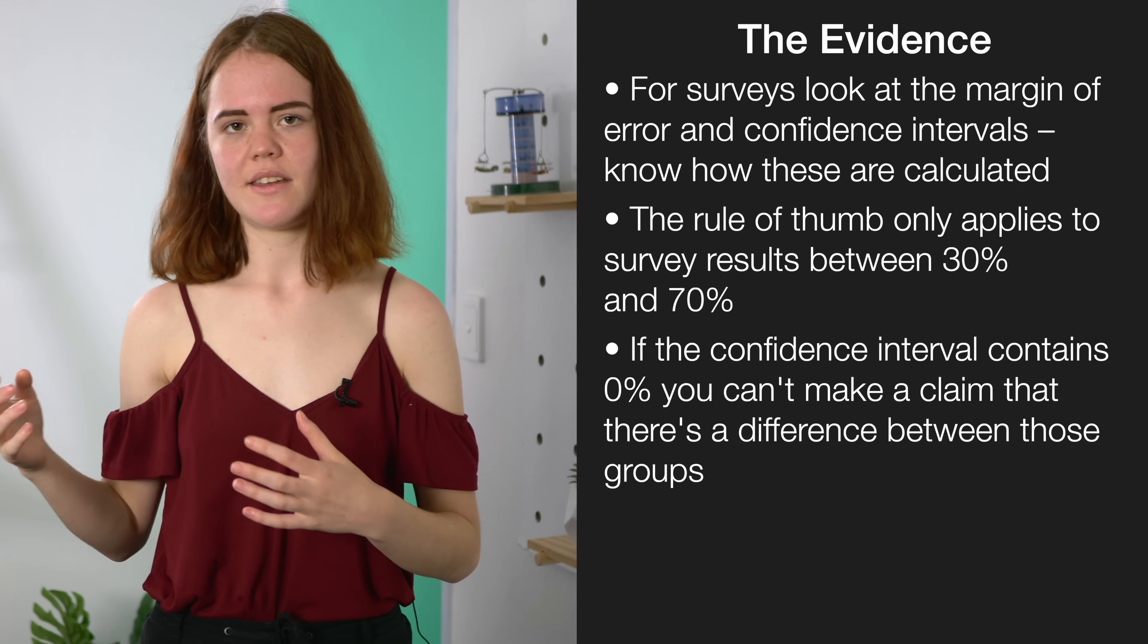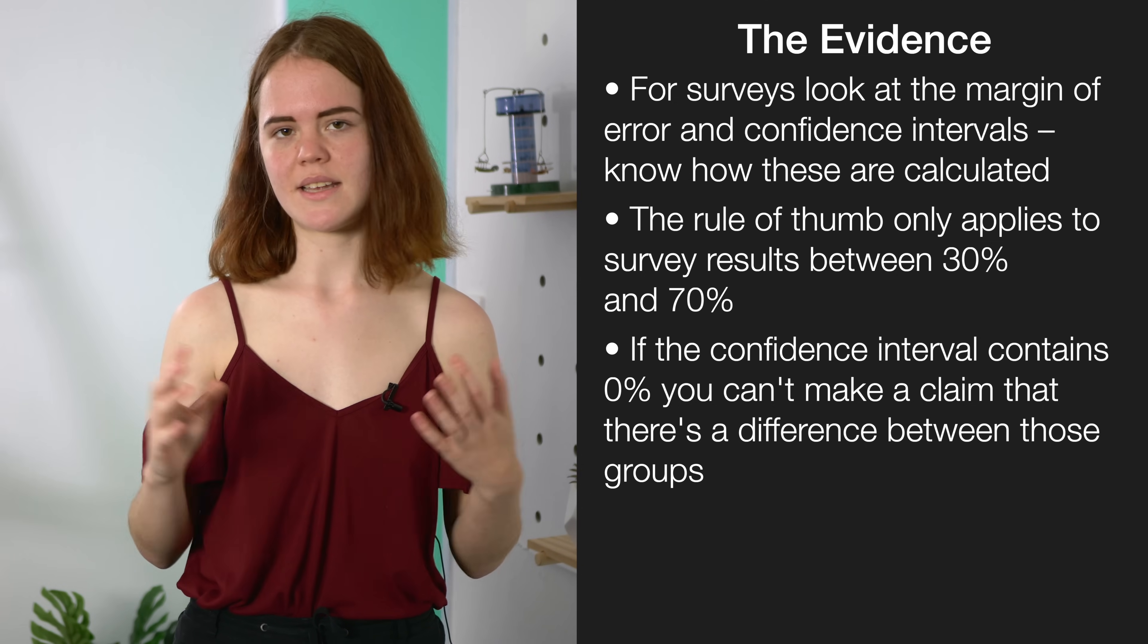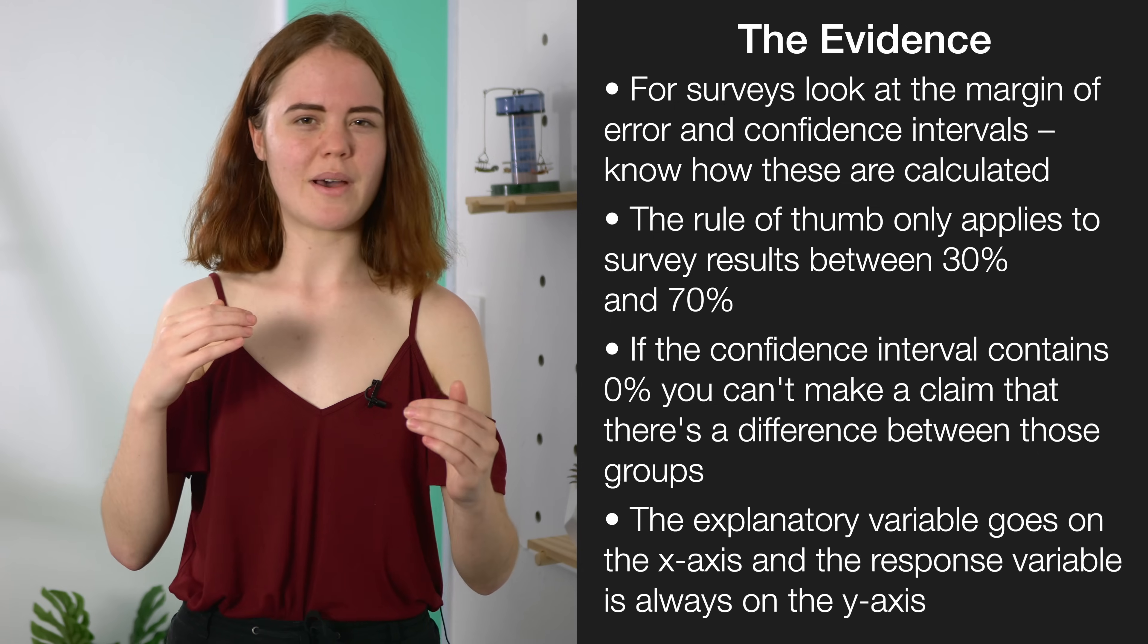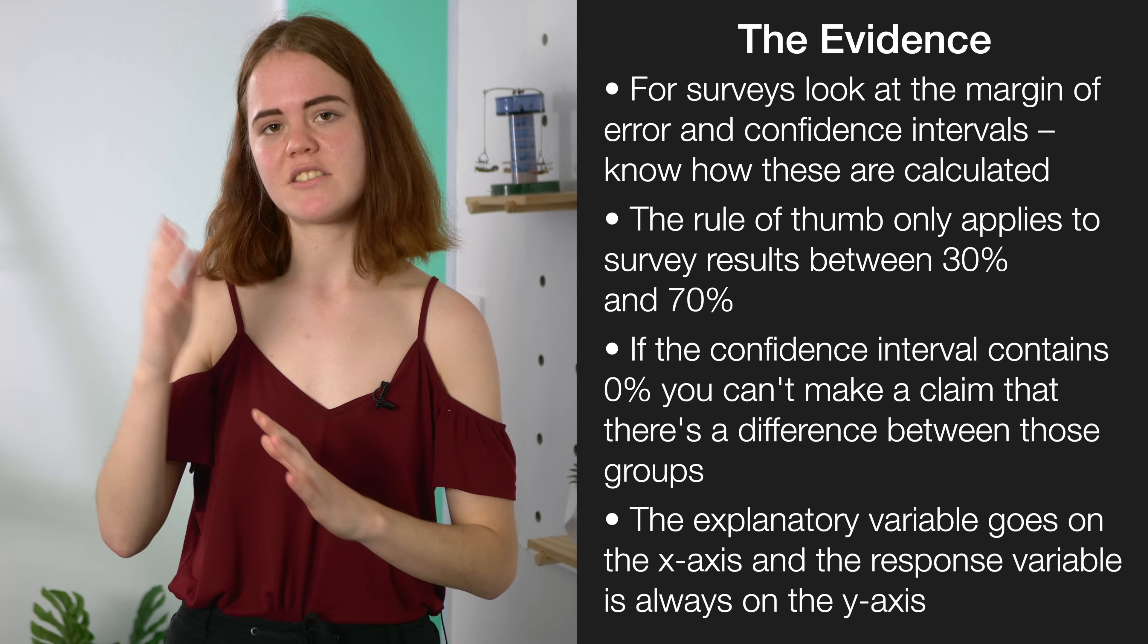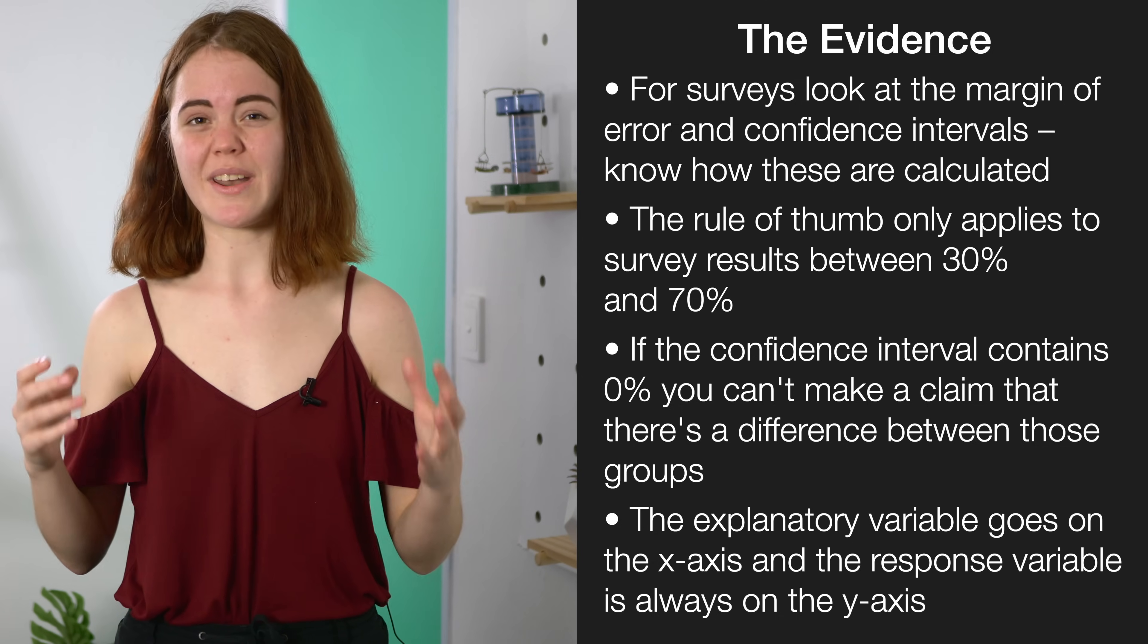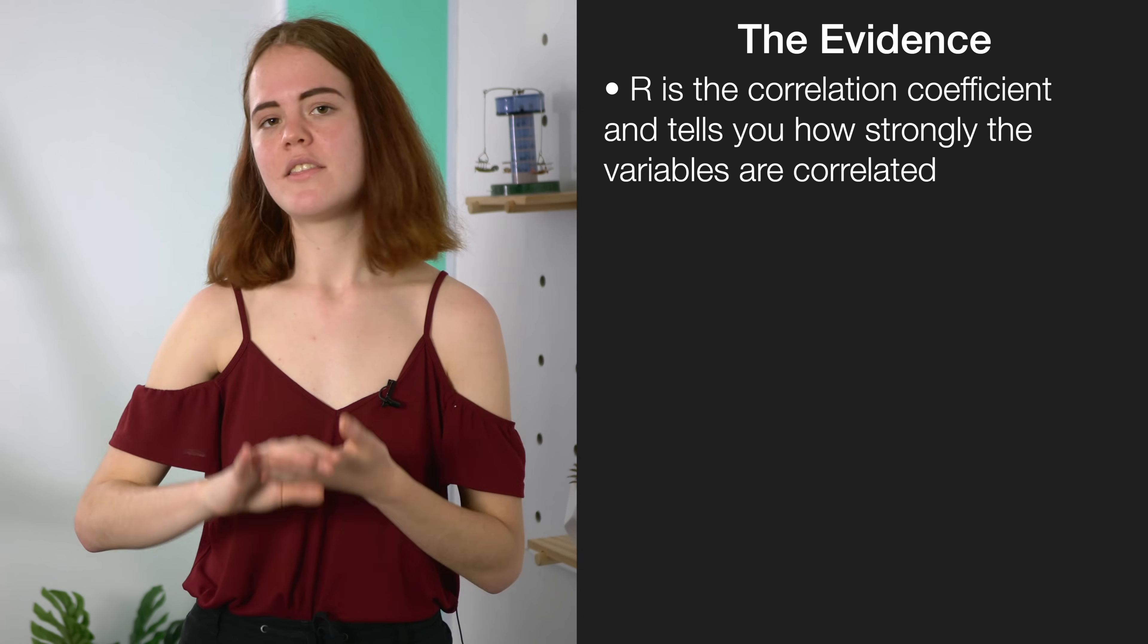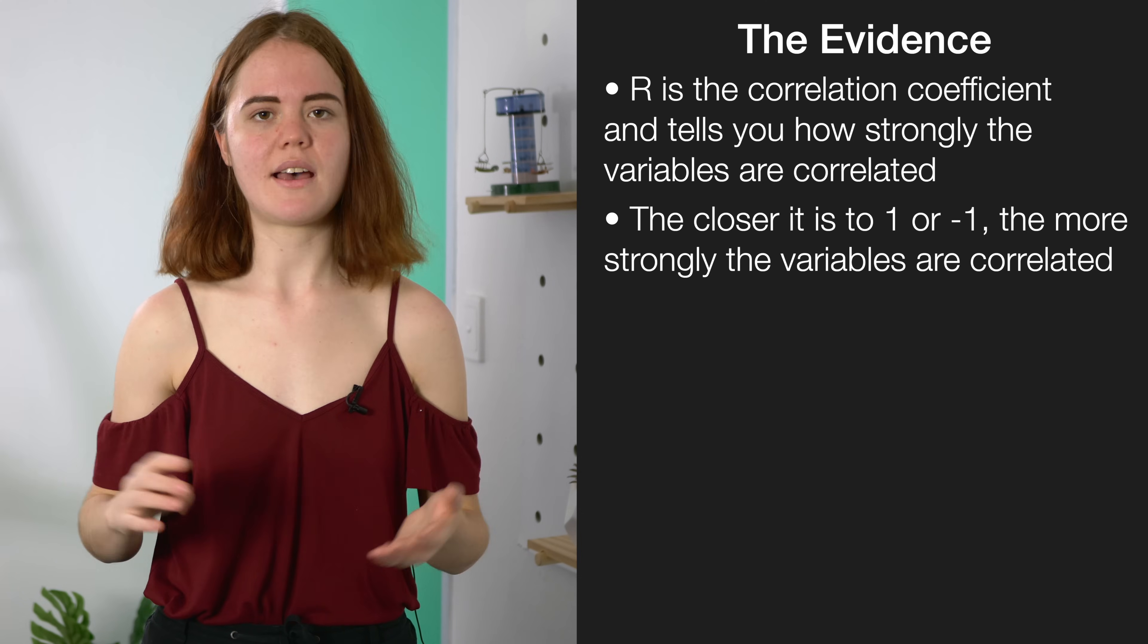For an observational study you might be asked to interpret the correlation between two variables, sometimes off a graph. Remember that the explanatory variable, whatever one we think might be causing the response variable, goes along the x-axis and the response variable always goes along the y-axis. You also want to be familiar with what R stands for. R is the correlation coefficient and tells you how strongly related the two variables are. The closer it is to one or negative one, the more strongly those variables are correlated.